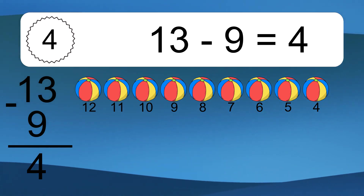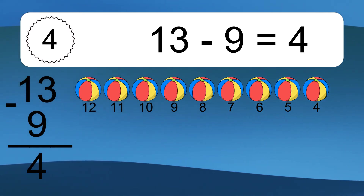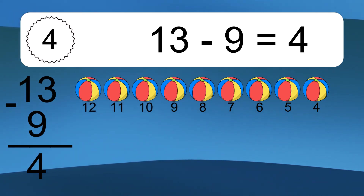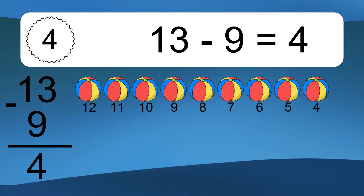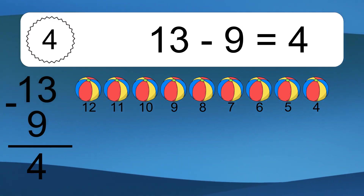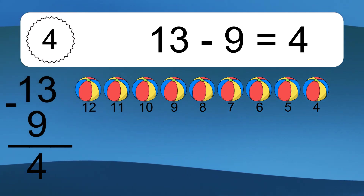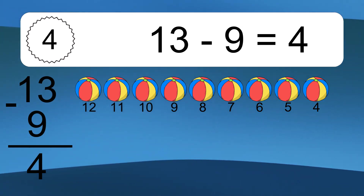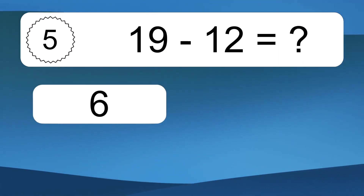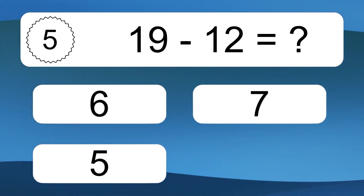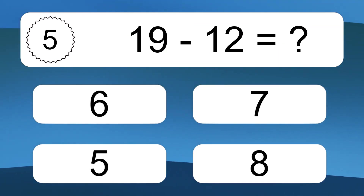20 minus 13 minus 9 equals what? 20 minus 13 minus 9 equals 4. Let's count it: 12, 11, 10, 9, 8, 7, 6, 5, 4.